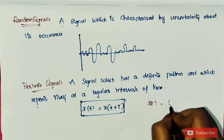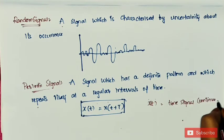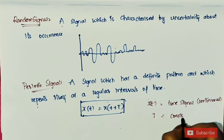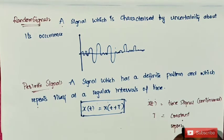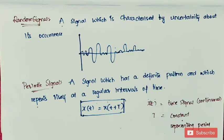x(t) is a continuous time signal. The signal is periodic when x(t) equals x(t + T), where T is a constant representing the period. The smallest value of T which satisfies this equation is called the fundamental period.